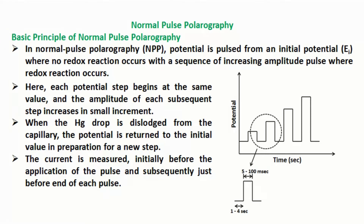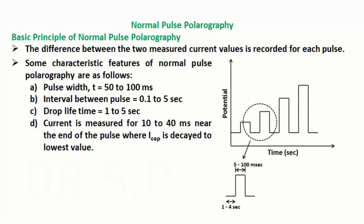The current is measured initially before the application of the pulse and subsequently just before the end of each pulse. The difference between the two measured current values is recorded for each pulse. Some characteristic features of normal pulse polarography are: pulse width T equals 50 to 100 milliseconds, interval between pulses equals 0.1 to 5 seconds, drop lifetime equals 1 to 5 seconds, and current is measured for 10 to 40 milliseconds near the end of the pulse where capacitive current ICAP is decayed to its lowest value.